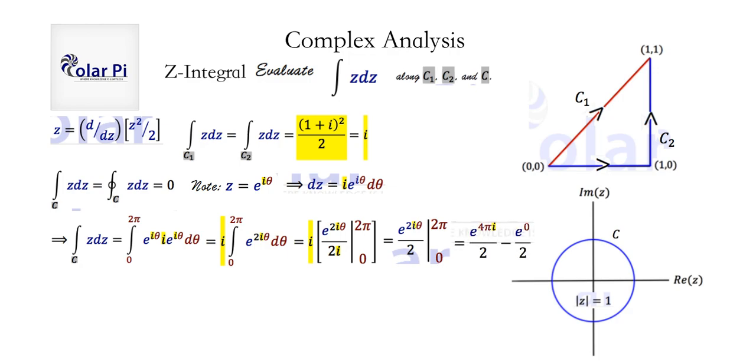And e to the 0 is clearly 1. But for e to the 4 pi i, remember, e to the i theta is equal to cosine theta plus i times sine theta. I made a video on that, proving why e to the i theta is equal to cosine theta plus i times sine theta a while back. And I'll link that video below this video.